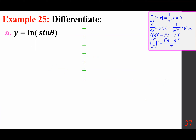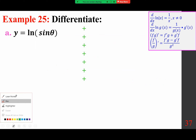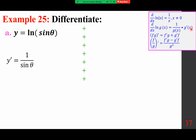Next: ln of sin θ — we want to differentiate this. According to the formula, flip g(θ) over: 1 over sin θ, times the derivative of sin θ which is cos θ. So the result is cosine θ over sine θ, which equals cotangent θ.